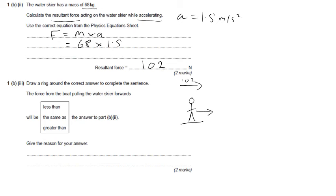On the water skier, we must have a pull from the boat, so I'll call that force P, and we must have a resistance force R there. So it says the force from the boat pulling the water skier forwards. Well, that pull force there must be bigger than our 102 because it also needs to overcome the resistance forces opposing it. So our pull force must be greater than that to overcome resistance forces.